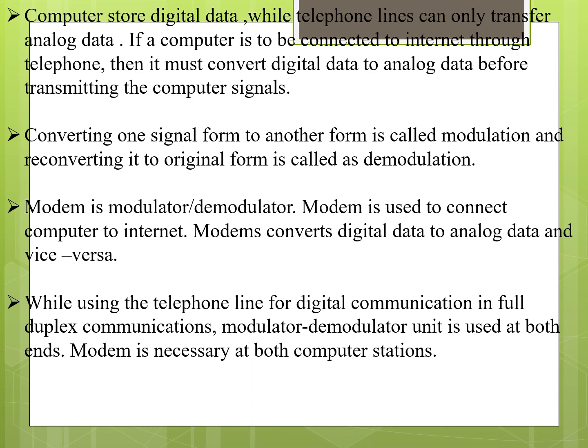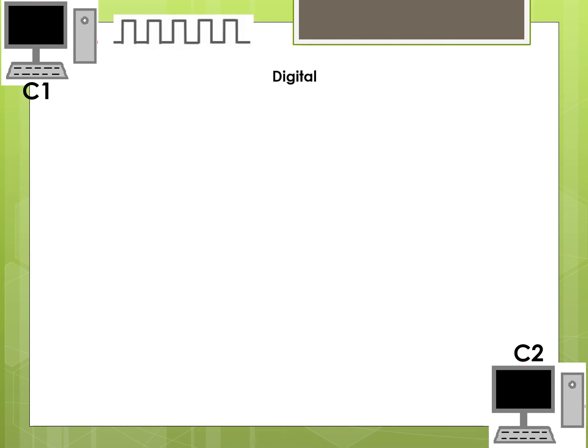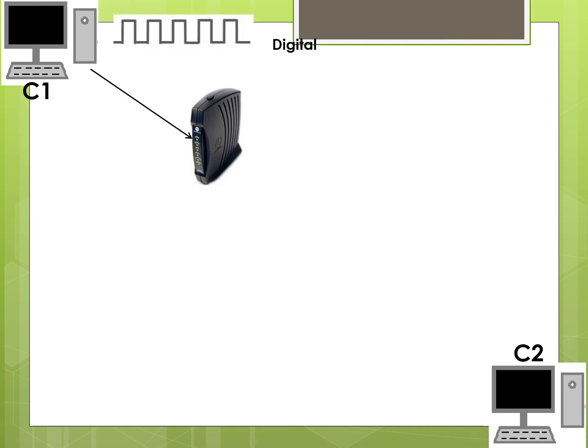While using a telephone line for digital communication in full duplex mode, modulator-demodulator units are used at both ends — modem is necessary at both workstations. In full duplex communication, computer A can transfer data to B and B can transfer data back to A. When C1 wants to transfer data to C2, C1 transfers digital data to its modem, where digital data is converted into analog.